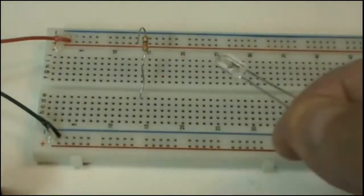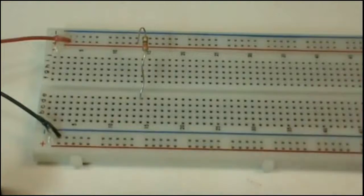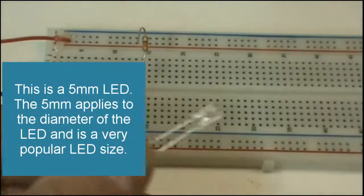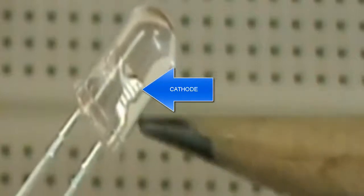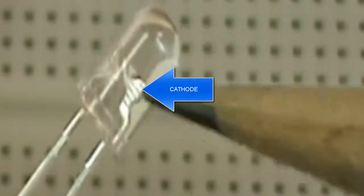One way to tell which part of the LED is the cathode or the side that goes to negative is to look and notice that there's a large piece of metal inside the LED. If it's clear and you can see this, that's usually the cathode.